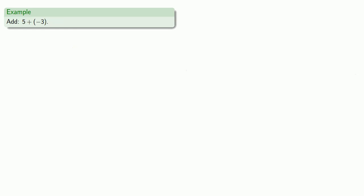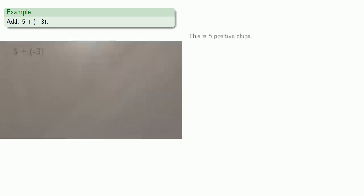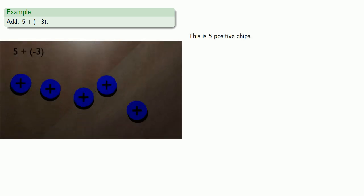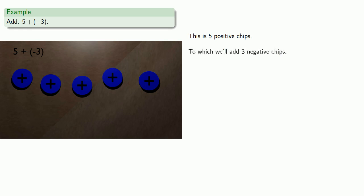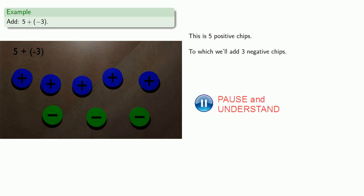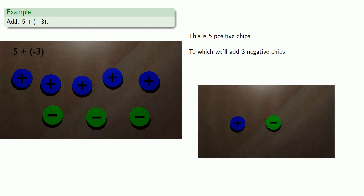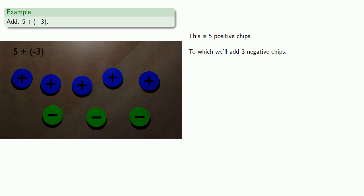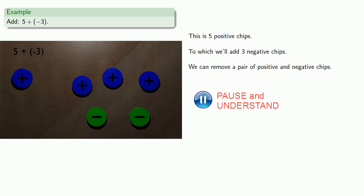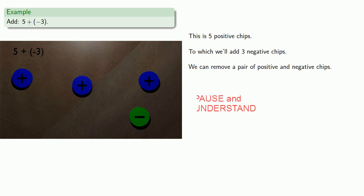What if I add five and the additive inverse of three? Five we can represent by five positive chips, and then we'll add three negative chips. A positive and a negative chip can combine and cancel each other out. We remove a pair of positive and negative chips — another pair, and another pair. So five plus the additive inverse of three is two.